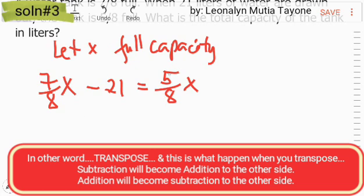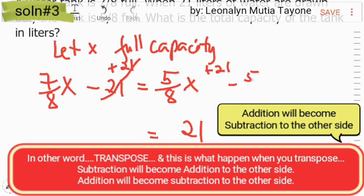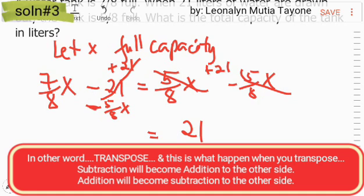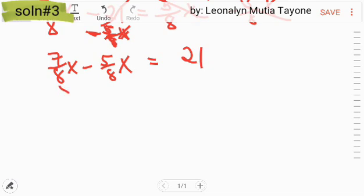Itong si 21 i-transfer natin sa kabila, at itong si 5/8x i-transfer natin dito sa kabila. Ang both sides mag-add tayo ng 21 para ma-cancel out si 21 dito at nandito na siya sa kabila — positive 21 na siya. So, itong si 5/8x, mag-minus tayo ng 5/8x sa both sides, ma-cancel out na siya dito. So, 7/8x minus 5/8x. Minus 5/8x. Kopyahin ang denominator na 8, kopyahin din itong si x. And then, 7 minus 5 is 2, equals 21.